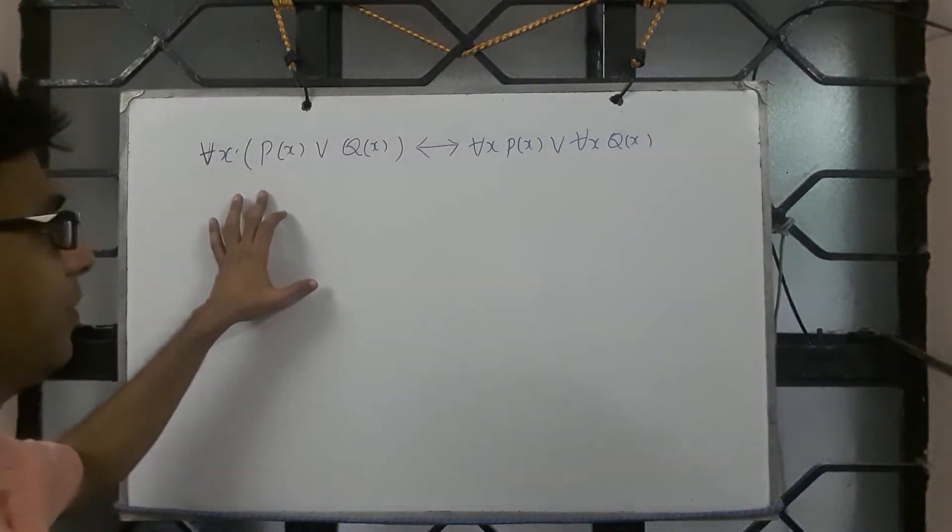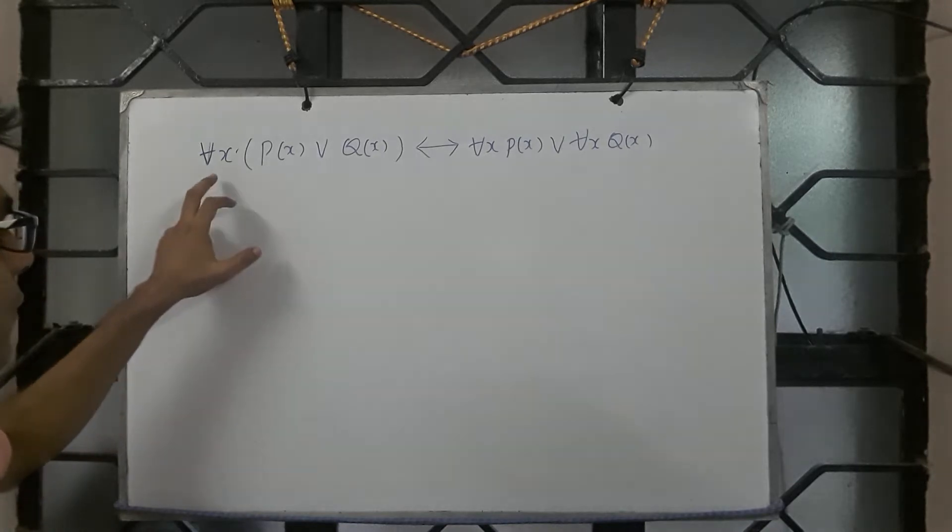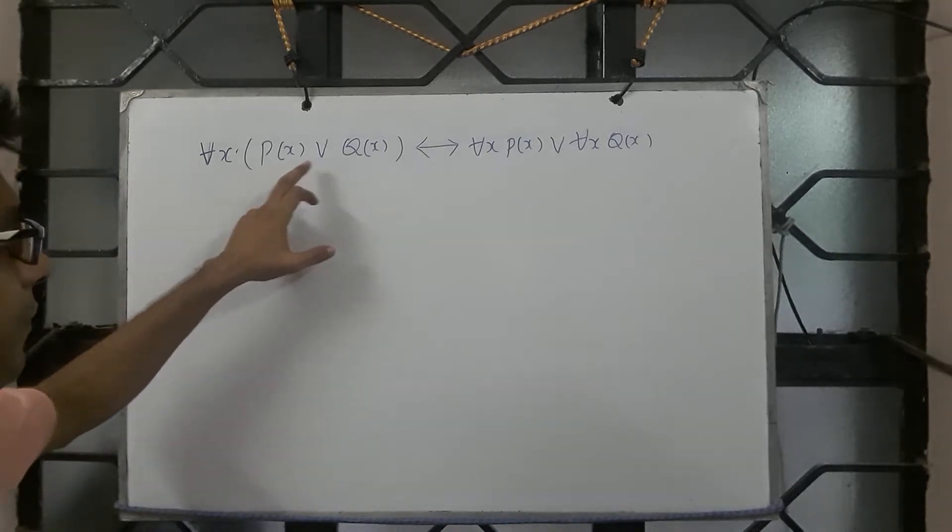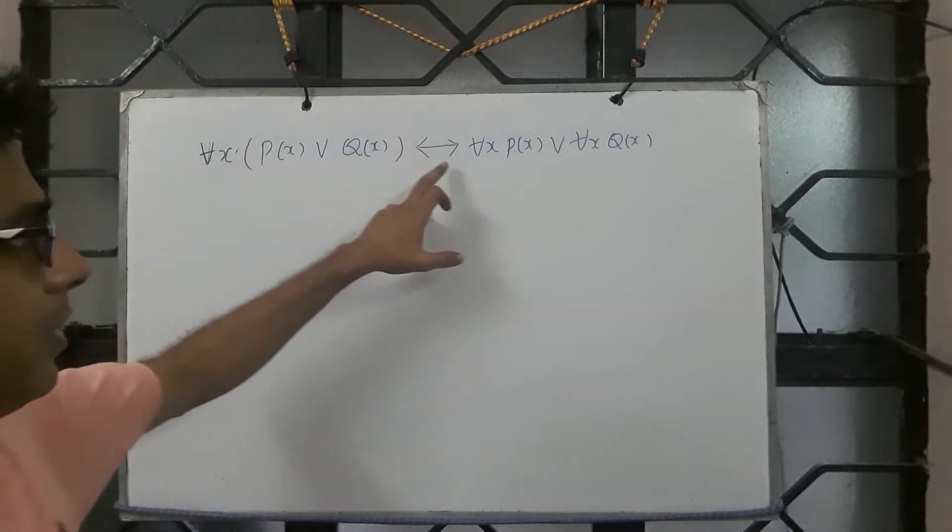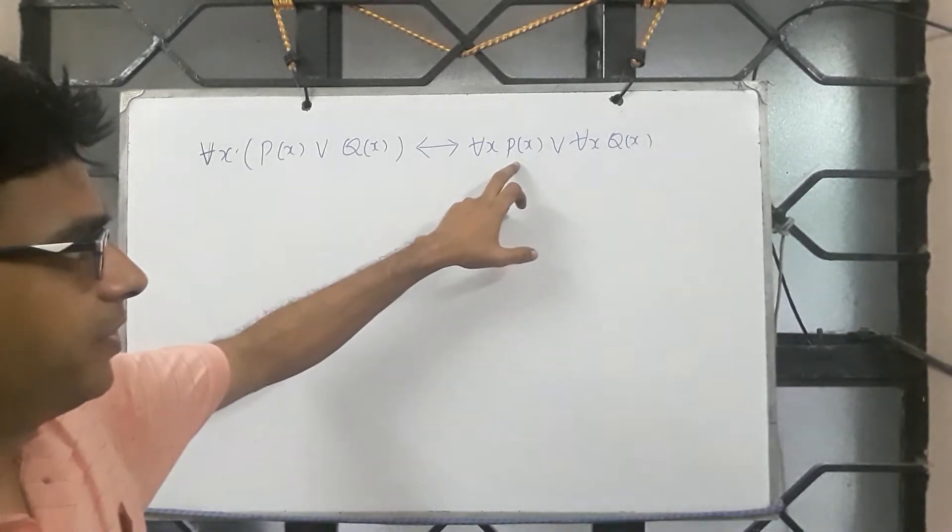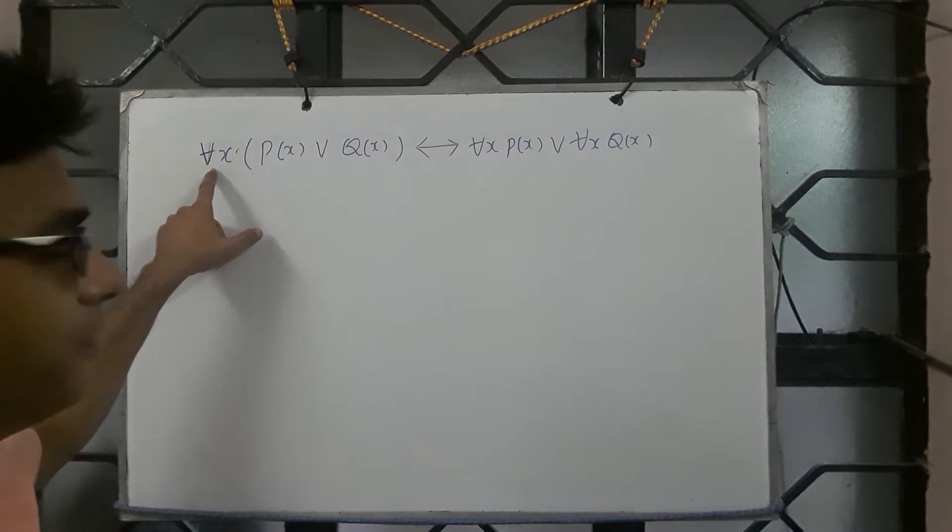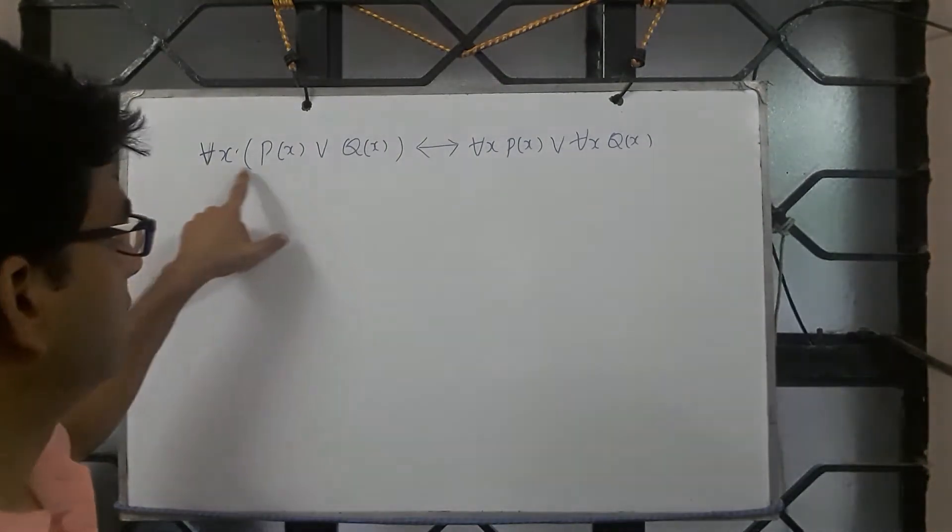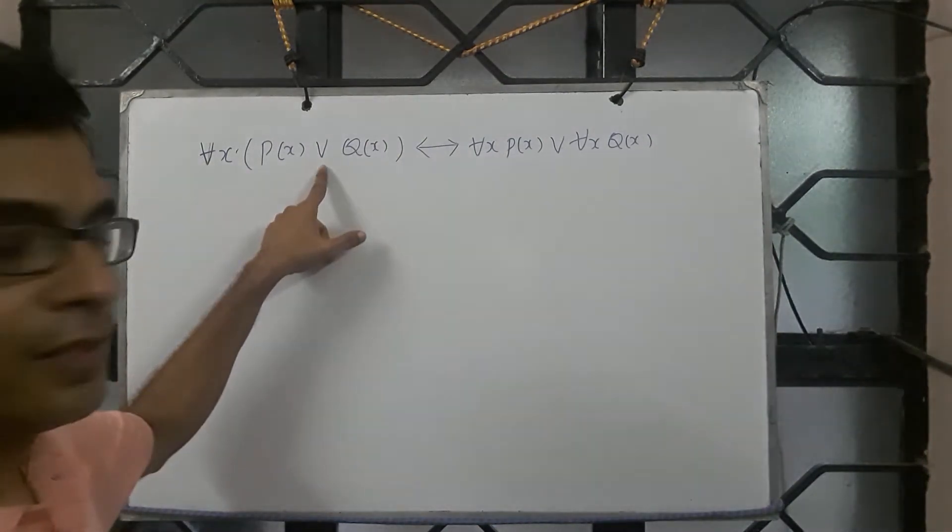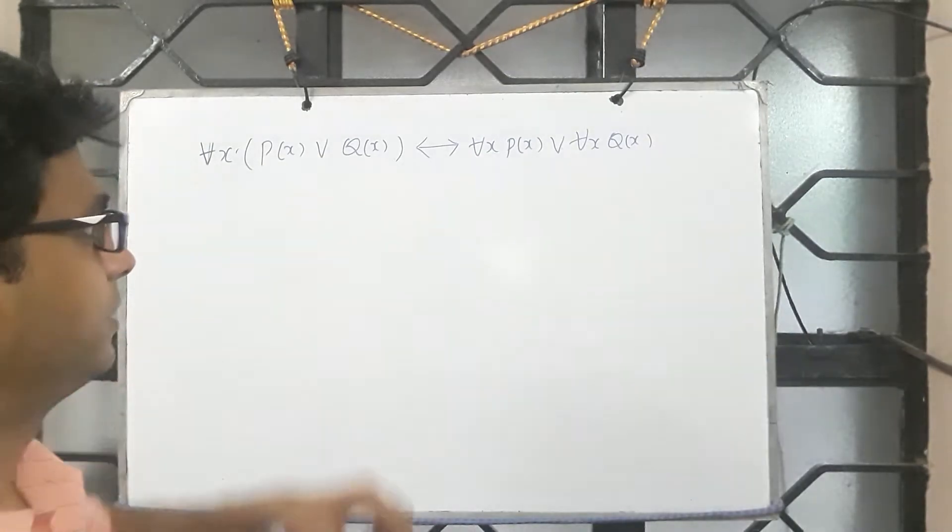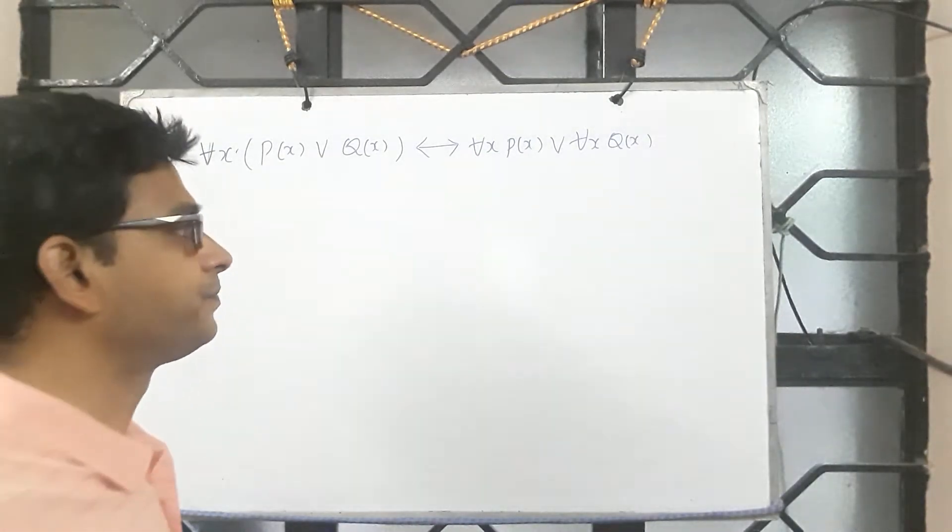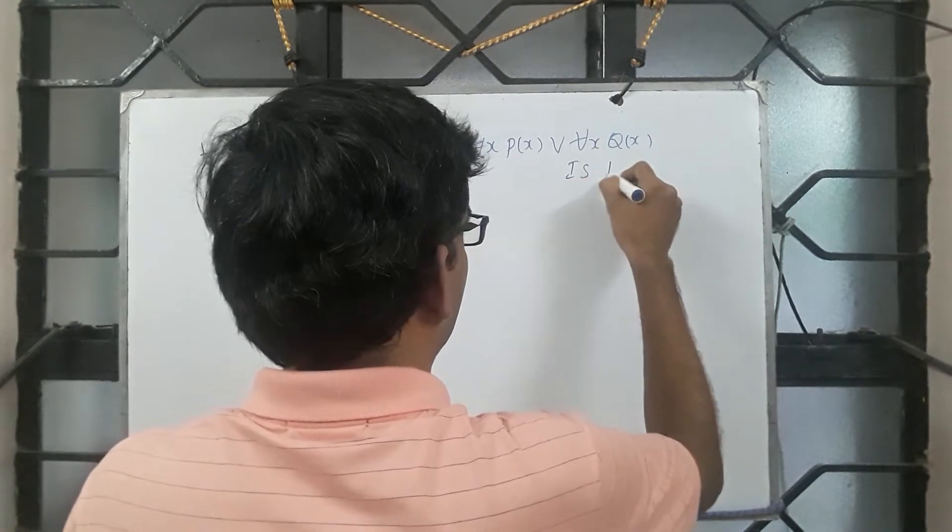Here is a variant of what we have seen before: for all x, P(x) or Q(x) biconditional for all x P(x) or for all x Q(x). We saw that the universal quantifier distributes over AND. We wish to know whether it distributes over OR as well. Is this true?